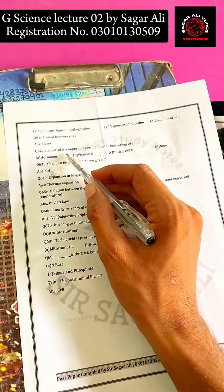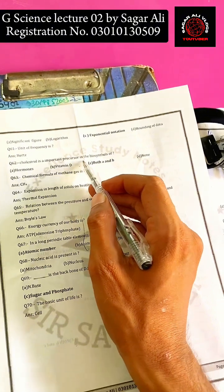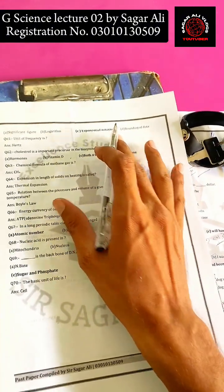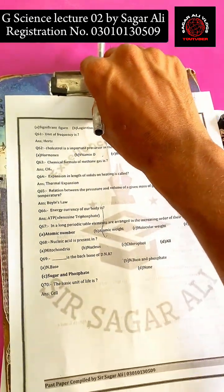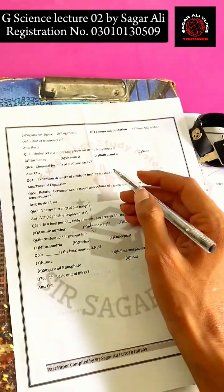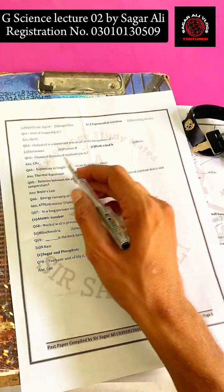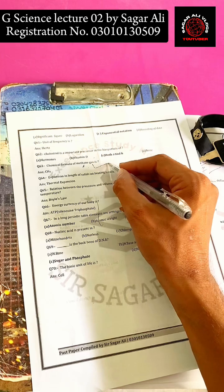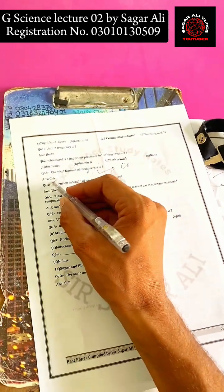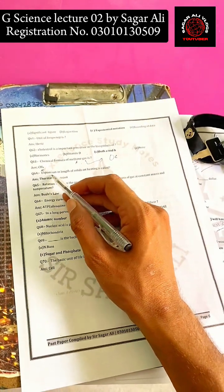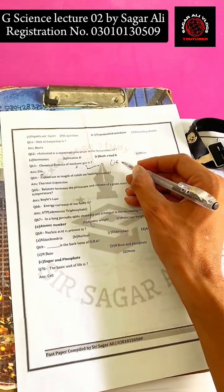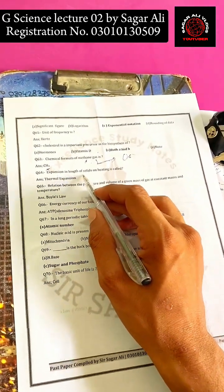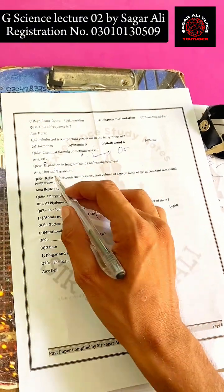Cholesterol is important in the biosynthesis of hormones A and B, and plays a role in hormone mechanisms in human beings. The fundamental expansion in the length of solids on heating is called thermal expansion.